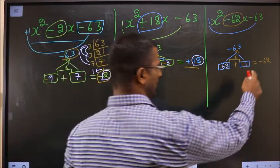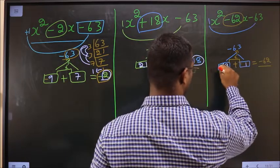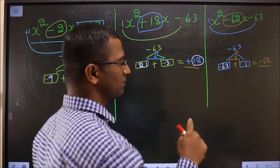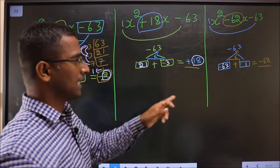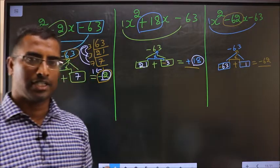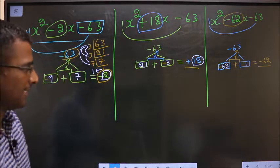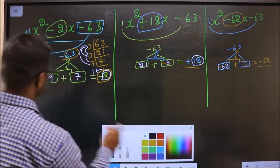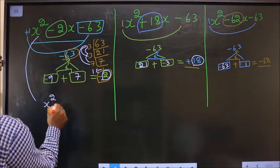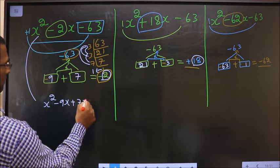For the third expression I should get minus 62. That could only happen if I place minus before 63: minus 63 plus 1 is minus 62, and minus 63 into plus 1 is minus 63. Now the signs are also adjusted. The first expression changes to x² - 9x + 7x - 63.